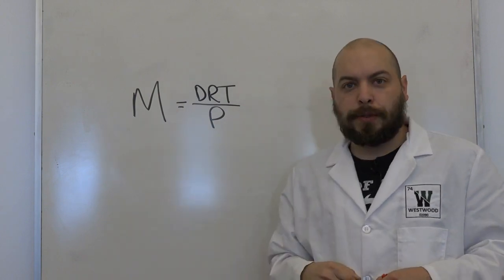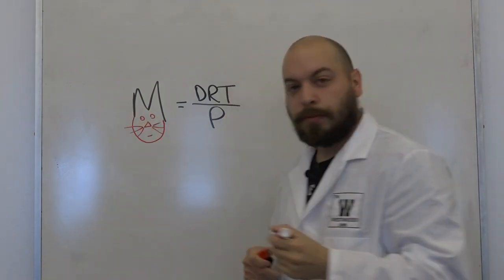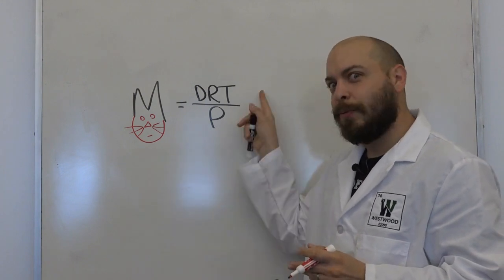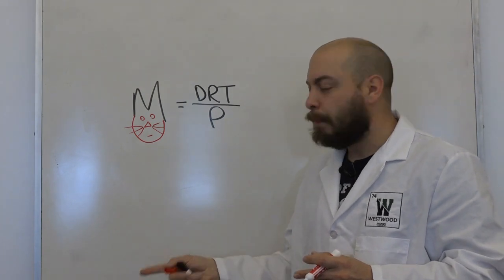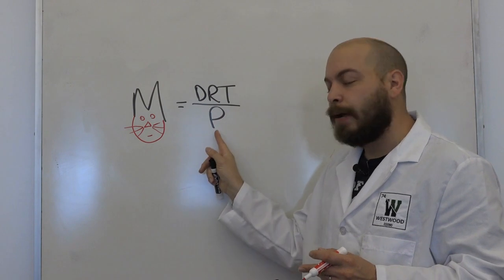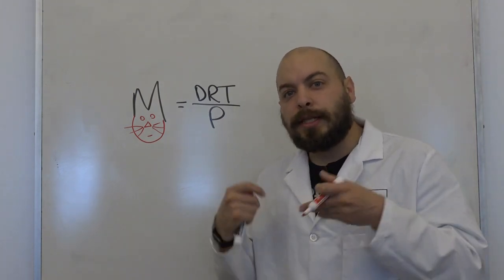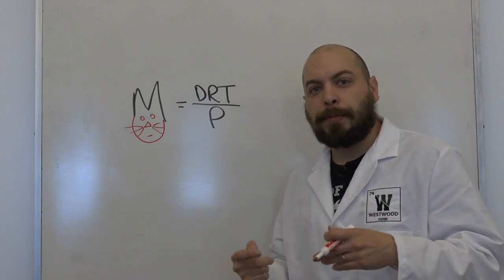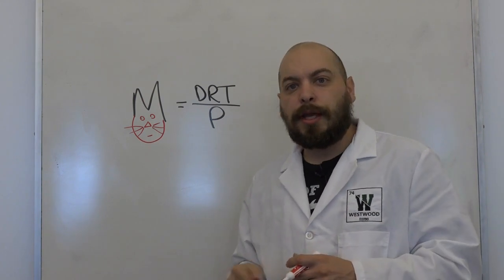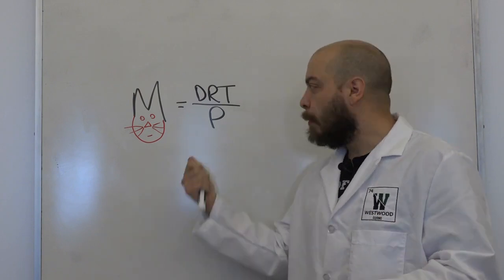I'll tell you how to memorize this equation — it's called the molar mass kitty cat. Any good kitty cat covers their pee with dirt. So: molar mass (big M) equals dRT over P — density times the gas constant times temperature in Kelvin, divided by pressure. Many times we can use this to determine the identity of a gas by identifying its molar mass. We can also make predictions based on the relative mass of a gas relating to its pressure or density. This equation is not given to you, so either derive it or memorize the molar mass kitty cat.